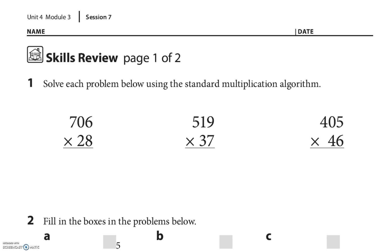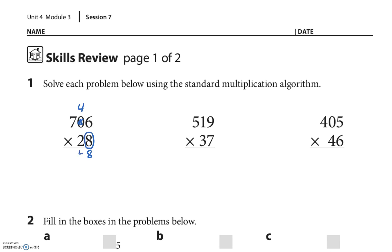I'm always going to start with the bottom right number — the ones place in the bottom number. So 8 times 6 is 48. I'm going to carry the tens — carry the 4. And 0 times 8 is 0, plus that 4 I carried over is 4. Then 8 times 7 is 56. I'm done with that 8.